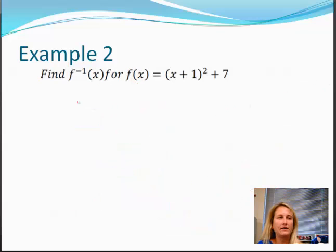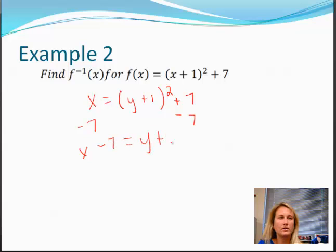Next we have the inverse of x for f of x equals x plus 1 squared plus 7. So again, we're going to switch. So x equals y plus 1 squared plus 7. Subtract 7. So x minus 7 is equal to y plus 1, and this is all squared. Take the square root.